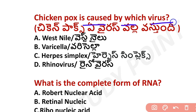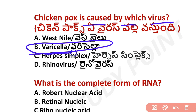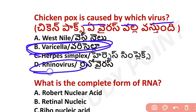For chicken pox or small pox, the virus responsible is the Varicella virus. Additionally, the Rhino virus causes the common cold.